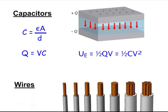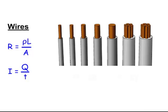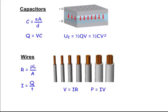Every wire will have a resistance equal to the resistivity of the material it's made out of — copper wire has the least resistance — times the length over the area. The greater the length, the more resistance; the greater the area, the less resistance. Current I equals charge in coulombs over time in seconds. This all comes back to Ohm's Law: V equals IR and P equals IV. That brings us to circuits.